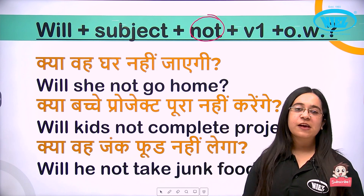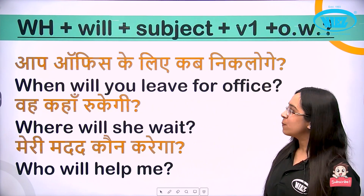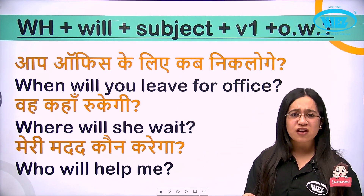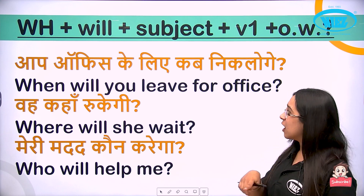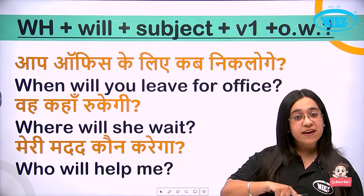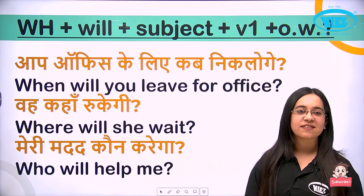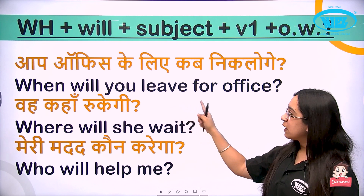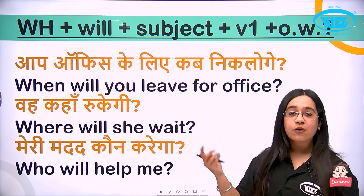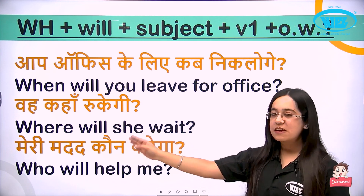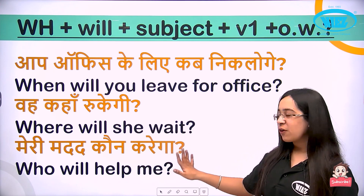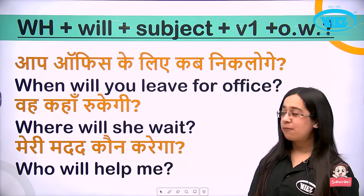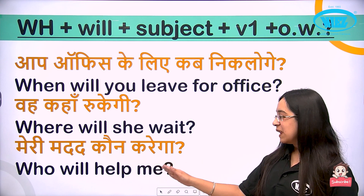We can also make these questions using WH-family words — just add the WH word at the beginning and the rest stays the same. 'Kya tum office jaoge' is 'Will you go to office,' but 'Aap office kab jaoge' becomes 'When will you go to office.' Similarly, 'Aap office ke liye kab niklo ge' — When will you leave for office? 'Kaha rukhegi' — Where will she wait? 'Meri madad kaun karega' — Who will help me?